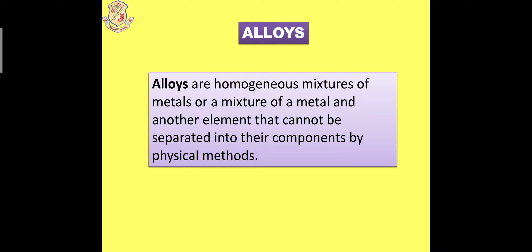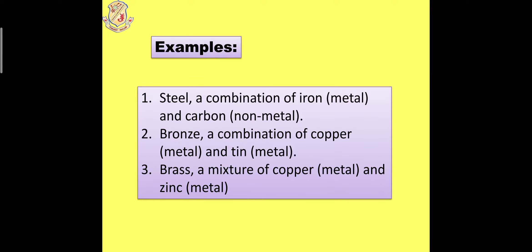To understand homogeneous mixture, the best example is of alloys, which are a homogeneous mixture of metal, or a mixture of a metal and a non-metal or another element, which cannot be separated into their components by any physical method. The properties of the constituents of the mixture are always the same — there is no change. For example, steel is a combination of iron and carbon; bronze is a combination of copper and tin; and brass is a mixture of 70% copper and 30% zinc. Metal and non-metal, and metal and metal, all are present in the formation of alloys.